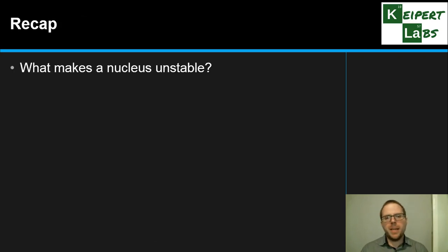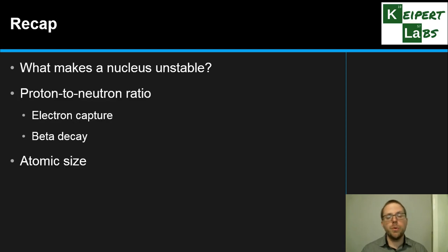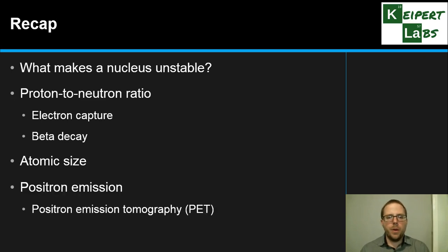So we talked about what makes a nucleus unstable - the fact that it's to do with either the proton-neutron ratio or atomic size. Depending on exactly which way the proton-neutron ratio is shifting, it will either undergo electron capture or beta decay, and if it's atomic size, we will undergo alpha decay. And we also talked about positron emission as another way that atoms can become more stable, which has relevance in positron emission tomography. Alright, thanks very much for watching. Bye for now.